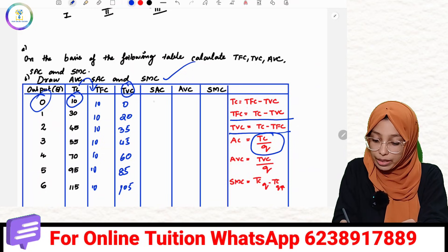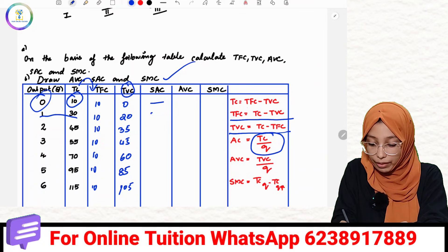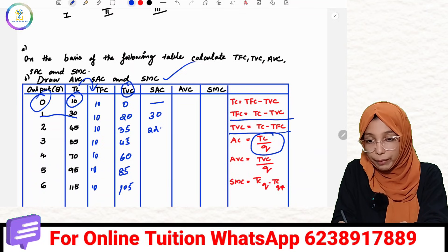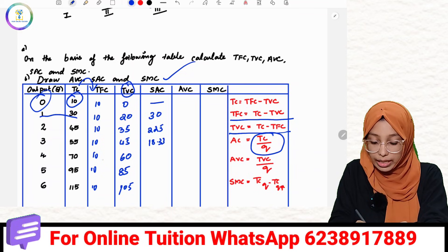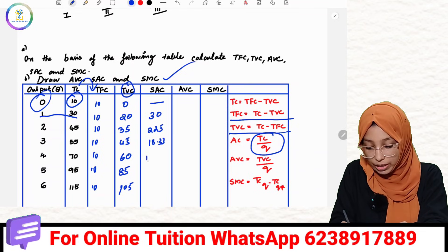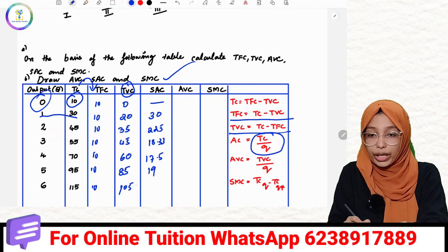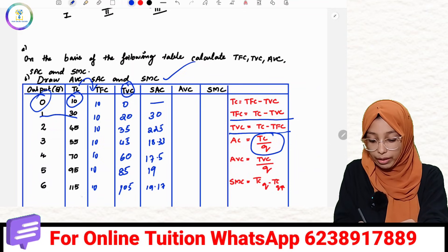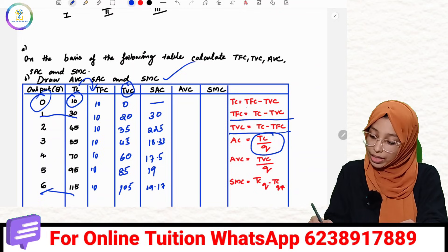10 divided by 0, 30 divided by 1 is equal to 30, 45 divided by 2 is 22.5, 55 divided by 3 is 18.33. Then 70 divided by 4 is 17.5, 95 divided by 5 is 19, 115 divided by 6 is 19.17. This is average cost.